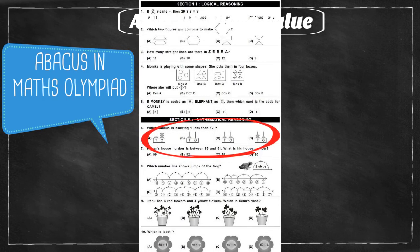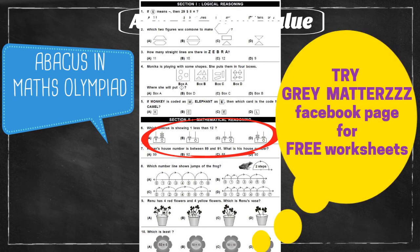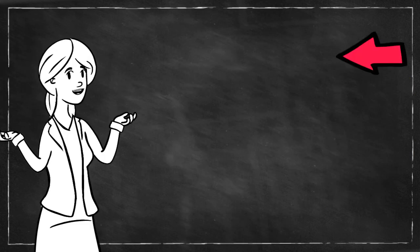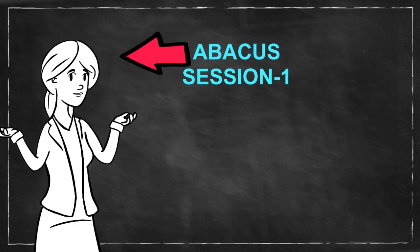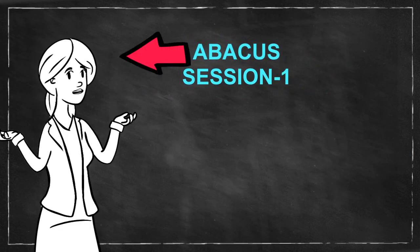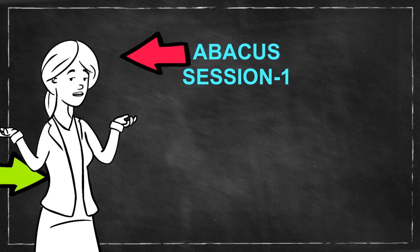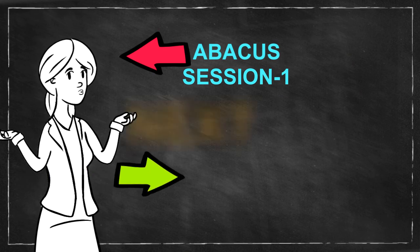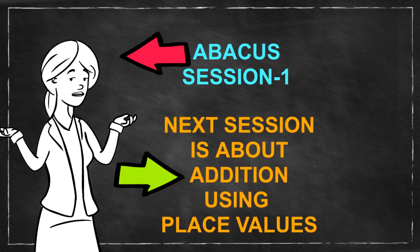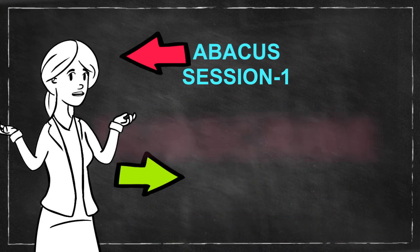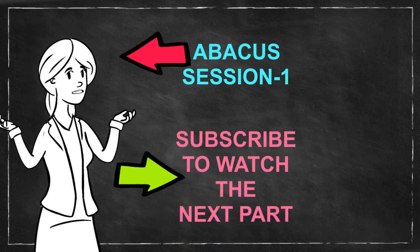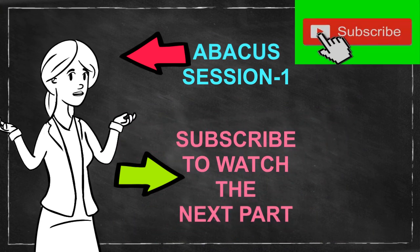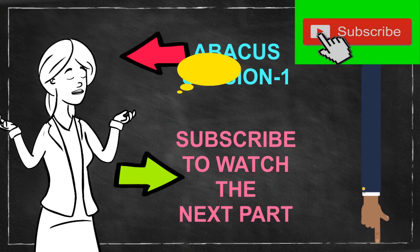If you want to try some worksheets on abacus, check the Grey Matters FP page. If you want to watch the abacus Part 1 video, click the link. In the next session, we will start with addition on abacus using this place value concept. If you want to be the first to watch that, subscribe to my channel. Thanks for watching — keep on counting!